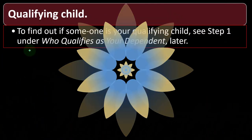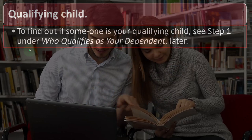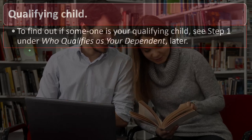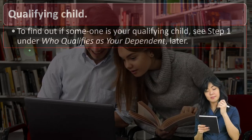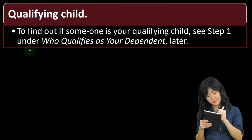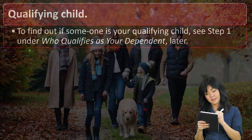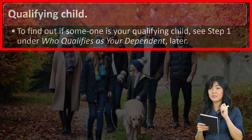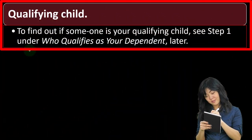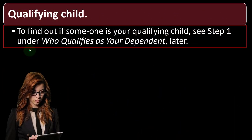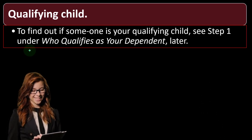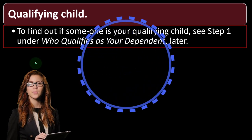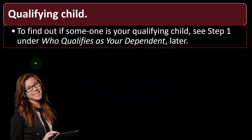With regards to a dependent child, custody issues could cause problems when determining filing status between single or head of household. Obviously, moving up to head of household is beneficial from a tax scenario. Qualifying child is something that came up in a prior presentation when thinking mainly about head of household requirements. To find out if someone is a qualifying child, you can see step one under 'who qualifies as your dependent.'